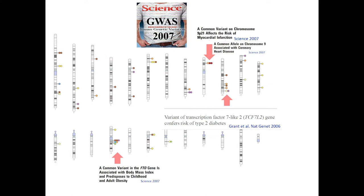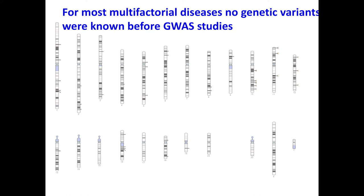These were wonderful times. I led, together with colleagues from the Broad Institute, the first GWAS study for lipids and lipoproteins — six of those circles are from that study, novel variants associating with cholesterol levels. We were in heaven, because there had been 15 years of research before this where we found nothing, and a kind of depression had started in the field. For most multifactorial diseases, no common genetic variants were known before GWAS studies.